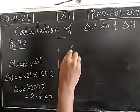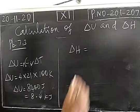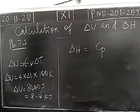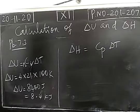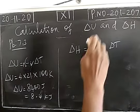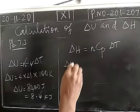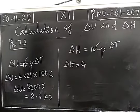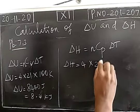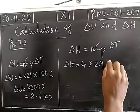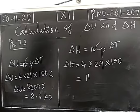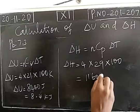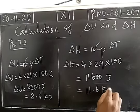Next, enthalpy change is calculated using heat capacity at constant pressure. For n moles of ideal gas, delta H = n × Cp × delta T. We have 4 moles of oxygen, Cp = 29 J/K/mol, and delta T = 100 K. So delta H = 4 × 29 × 100 = 11600 J = 11.6 kJ.